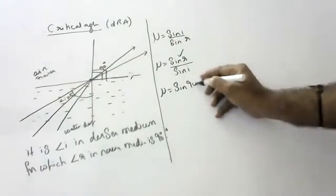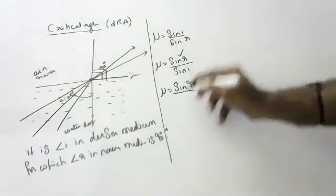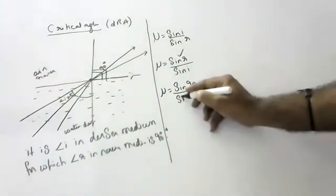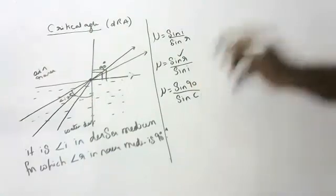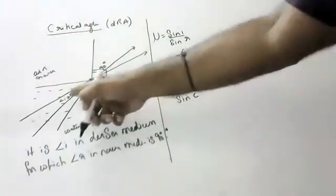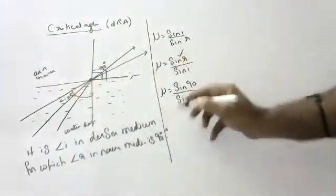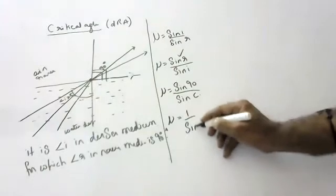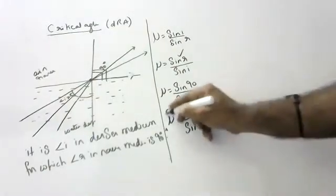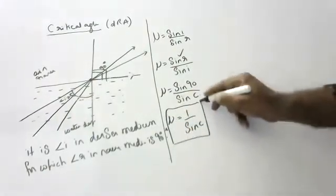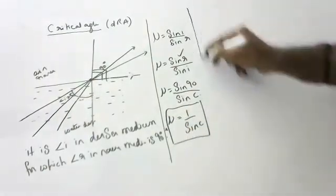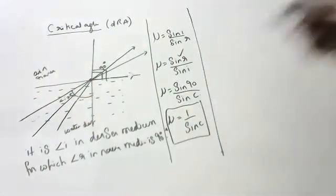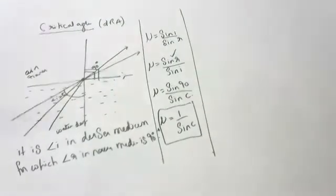Sine r is sine 90 and sine i is sine c, where c is the critical angle. So mu is equal to 1 by sine c. That is the formula for critical angle: mu equals 1 by sine c.